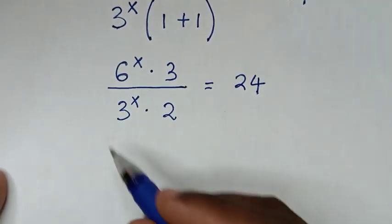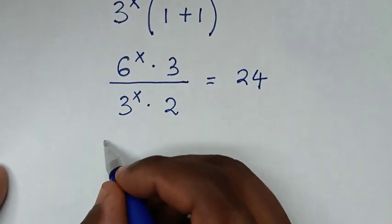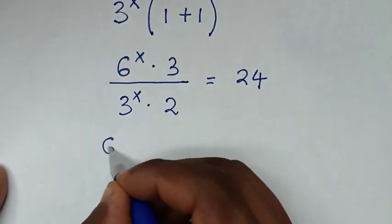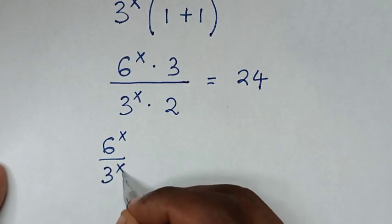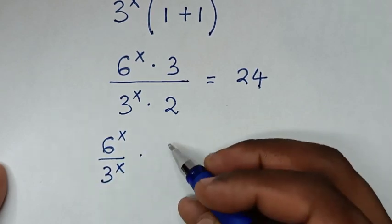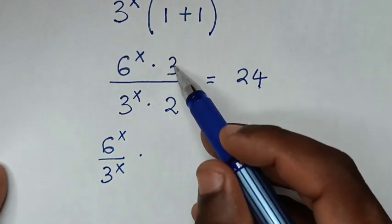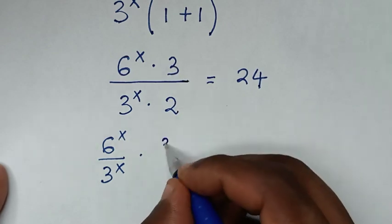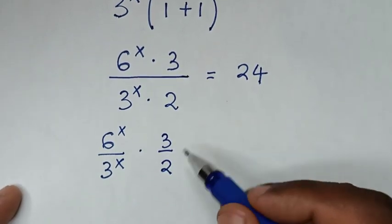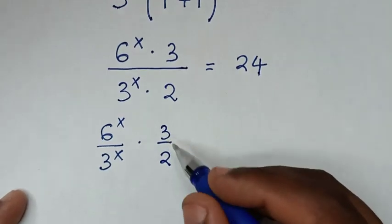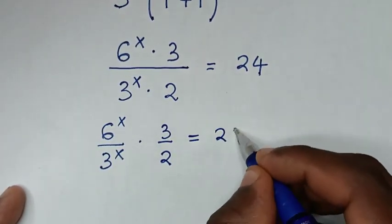Then we divide the exponential parts: 6 power x over 3 power x, and also divide the numbers 3 over 2, then multiply, which will be equal to 24.